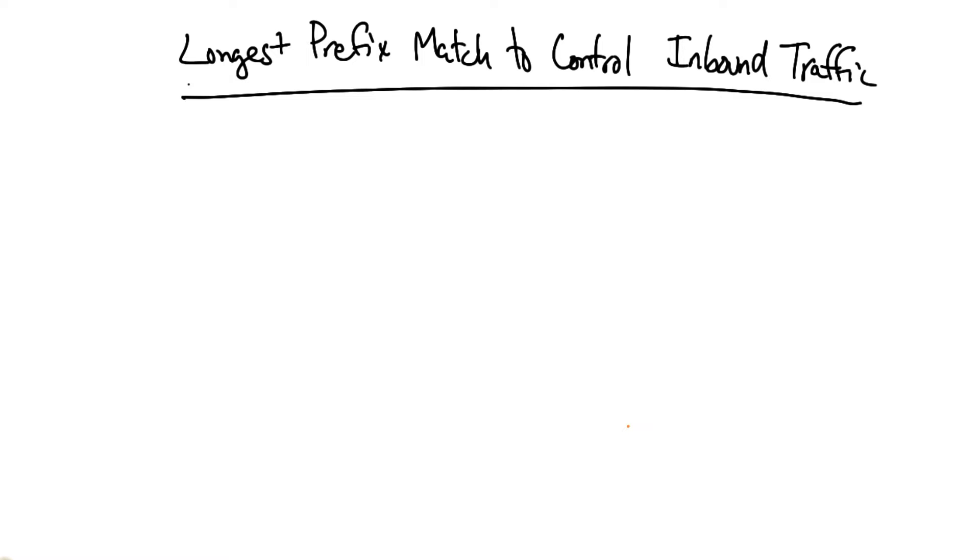Now in a previous lesson, we looked at how AS path prepending can be used to control inbound traffic. As it turns out, longest prefix match can also be used to control inbound traffic.